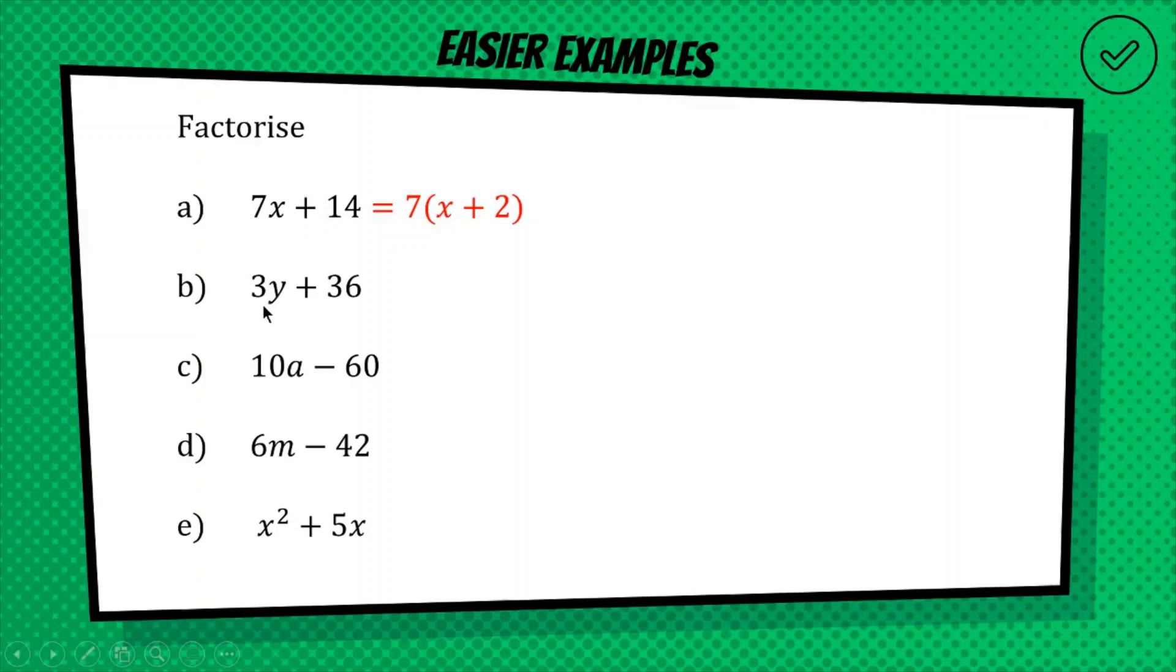All right, next one, we've got 3y and 36, we're looking for a common factor. We can see that's 3, because we have 3 times y here, and we have 3 times 12 here. So these questions are much easier if you're pretty good at your times tables, otherwise they can sometimes take you a while to find what that factor is. In this case, it's going to be 3.